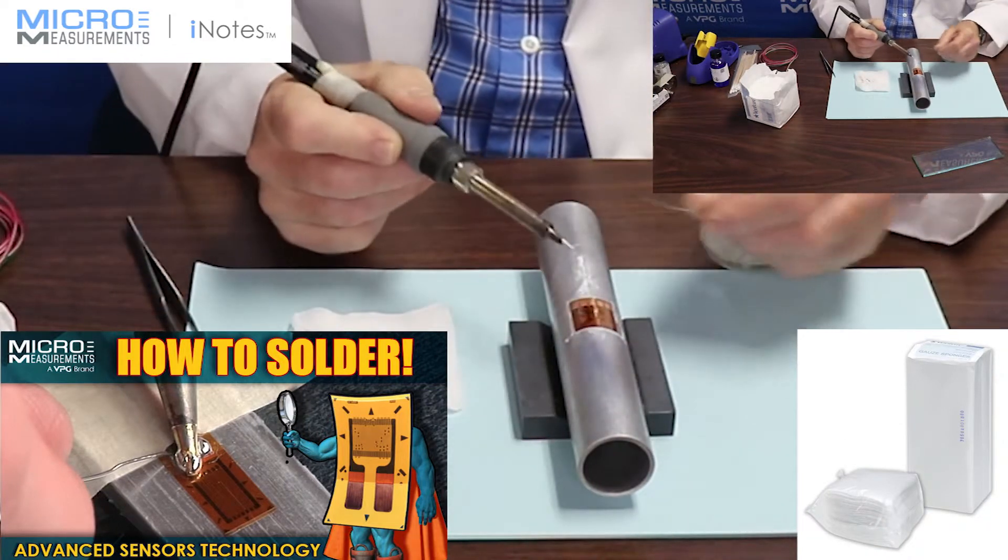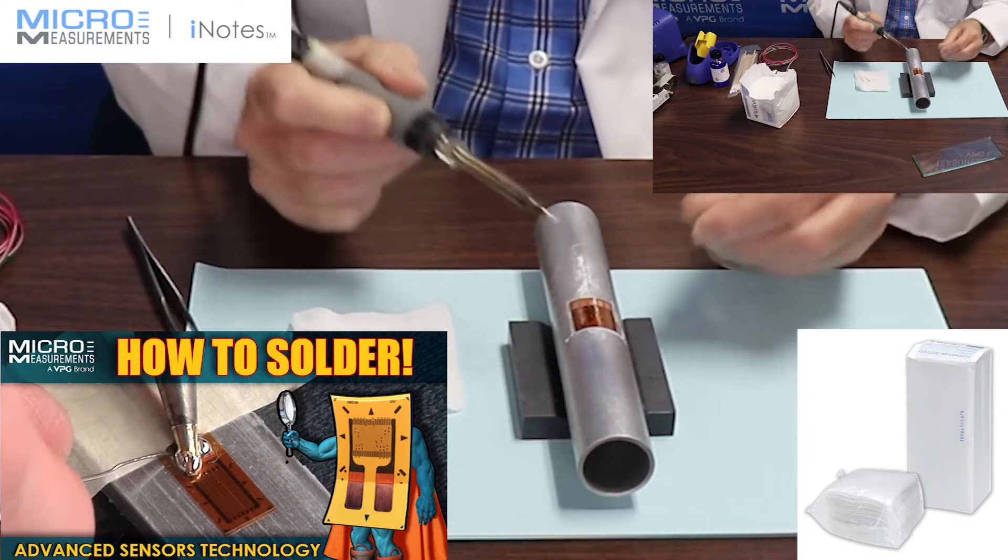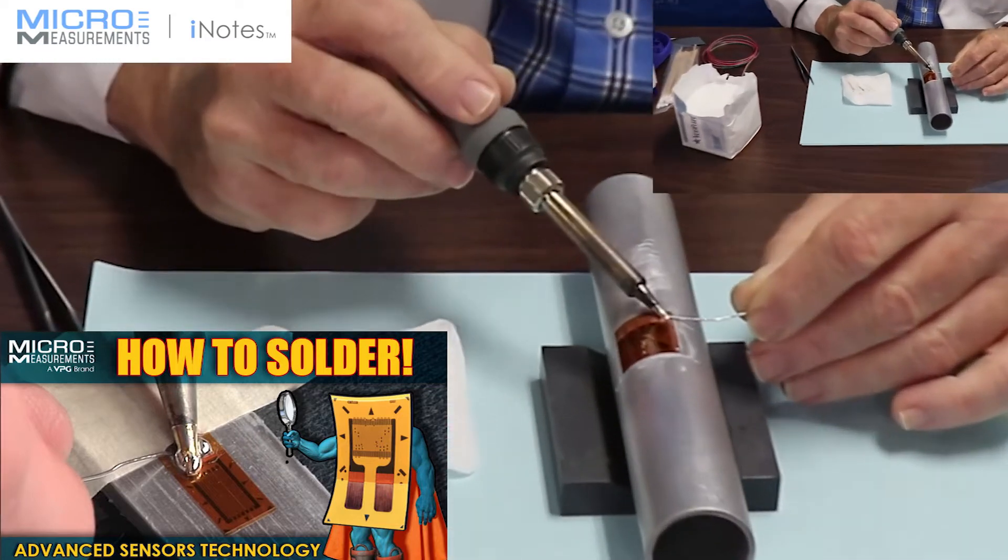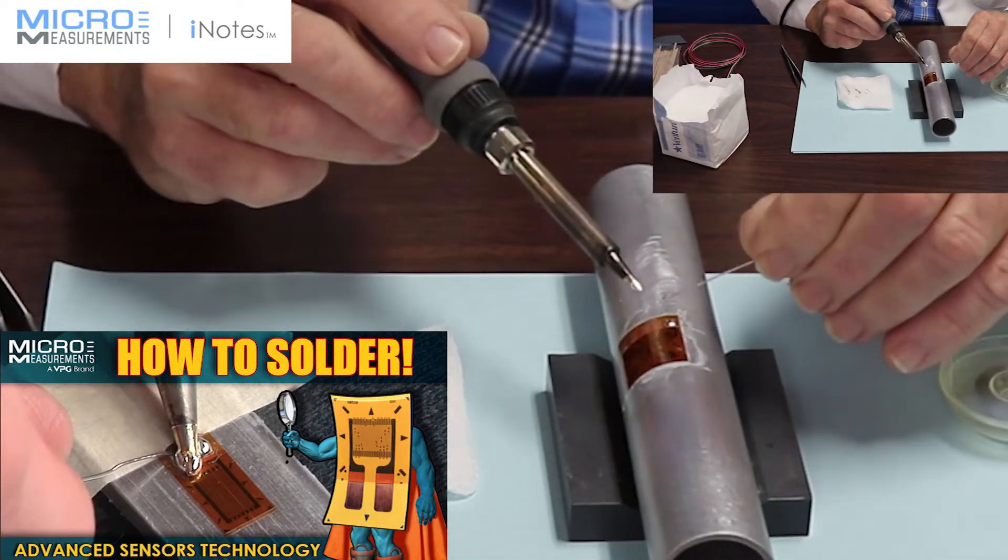So I'm going to clean the tip, lightly tin the tip, place the solder in the target area, press the iron firmly down in, and add fresh solder and flux.